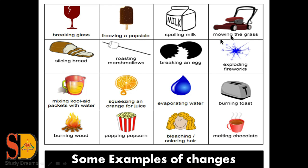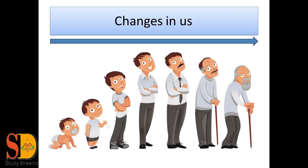We also have more examples like slicing of bread, roasting of marshmallows, breaking an egg, exploding fireworks, mixing, squeezing, evaporation, burning toast, burning wood, popping popcorns, bleaching or colouring hair, and melting chocolates. These are some examples which show us changes around us.